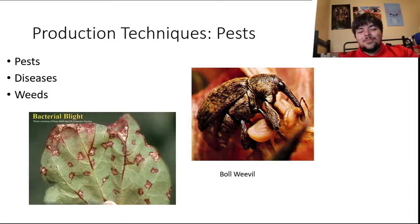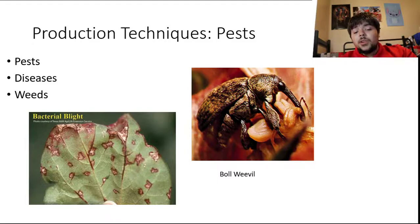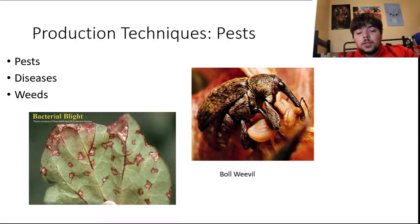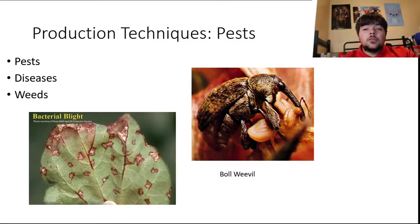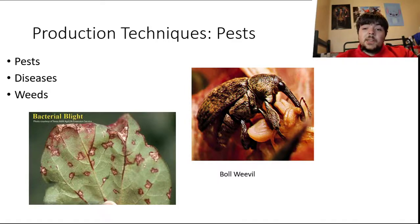Some pests that cotton deals with include pet worms, flea hoppers, boll weevils, boll worms, aphids, stink bugs, beet armyworm, and spider mites. The boll weevil will plant its eggs in the boll front, making it very difficult to kill after they are planted. The best way to combat this is to use insecticides early on.